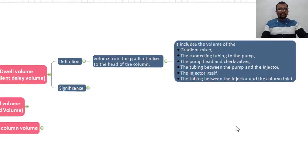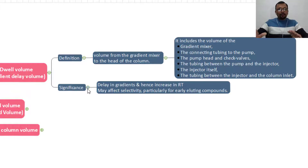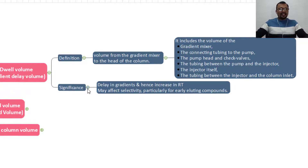Let us also understand the significance of the dwell volume and why it is so important. As you know, dwell volume is also known as the gradient delay volume. The higher the dwell volume, the more the gradient will be delayed during the HPLC run, and that is what causes a delay in the gradient.